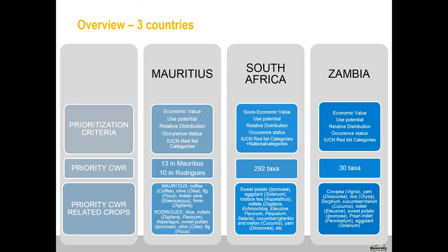The first step was to develop a checklist of crop wild relatives in the three countries. From that checklist, each country prioritized species using a set of criteria: the economic importance of the crop wild relatives, their relative distribution within the country in terms of whether they are endemic or not, and the level of threat they face. These three main criteria were used across all three countries, though each applied them slightly differently.